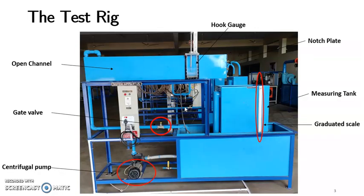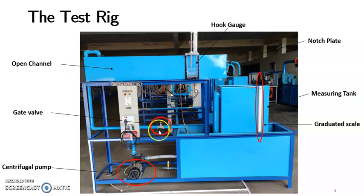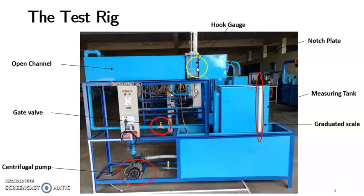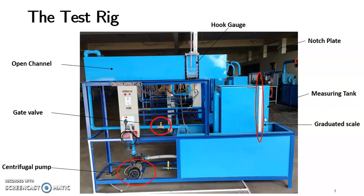The test apparatus remains the same as for the V-notch. There is a sump tank and a centrifugal pump with power supply. Water from the sump is pumped through a gate valve into the open channel. The gate valve controls the discharge. Water flows through the open channel, and at one end the notch plate is attached. A hook gauge is used to calculate the head over the notch. Water passing through the notch is collected in a measuring tank, also known as the collecting tank, which has a graduated scale to measure the height of water stored.